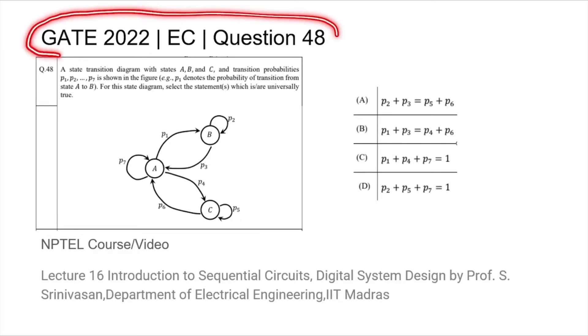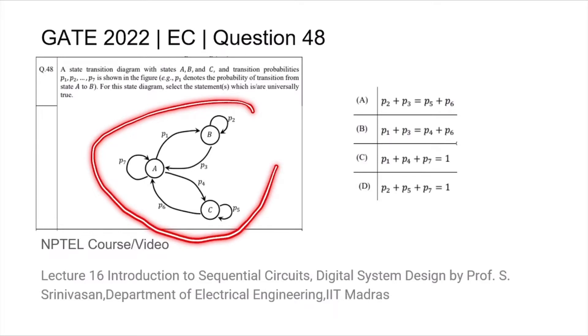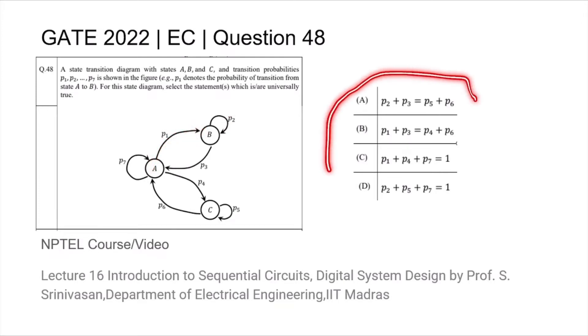This is question number 48 from the GATE 2022 EC paper, where we are given a state transition diagram. P1, P2, and so forth are the probabilities of transitioning from one state to the next. We are asked to find out which of the following statements are true with regards to these state transition probabilities.